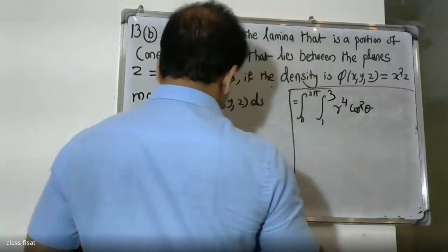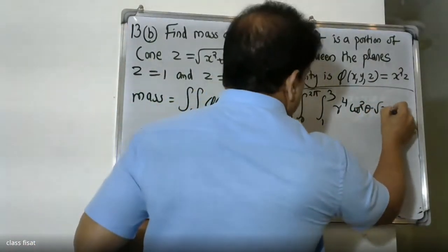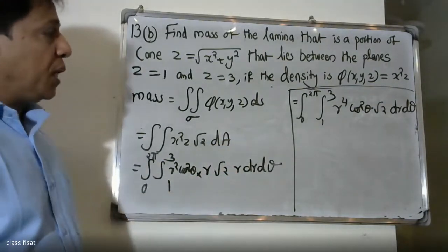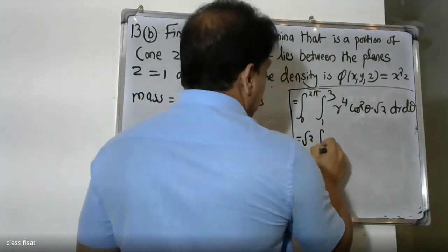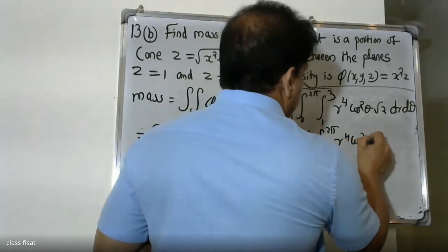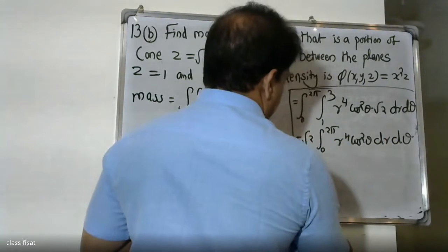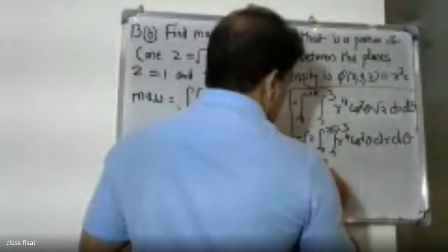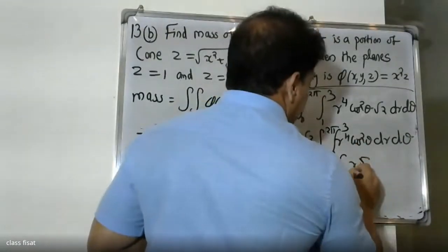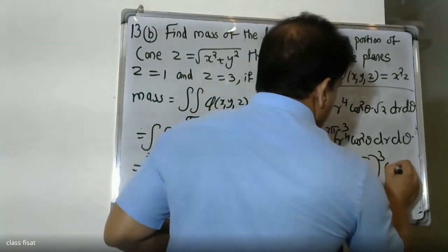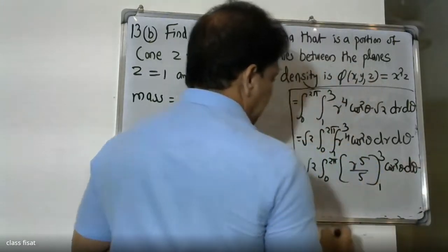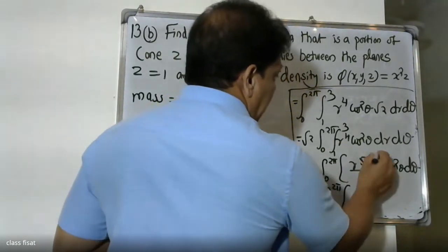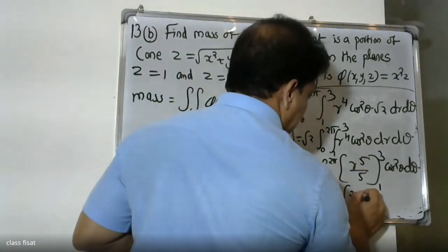Substituting x = r cosθ into x², we get r² cos²θ. The full integral becomes √2 times the integral from 0 to 2π and 1 to 3 of r² cos²θ · r · r dr dθ, which is √2 ∫₀²π ∫₁³ r⁴ cos²θ dr dθ. Integrating r⁴ gives r⁵/5, evaluated from 1 to 3.